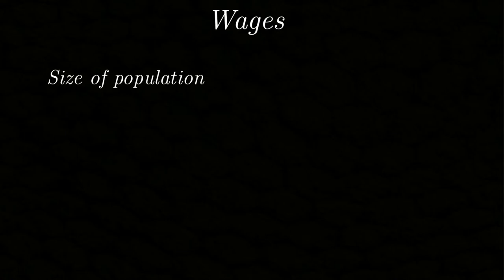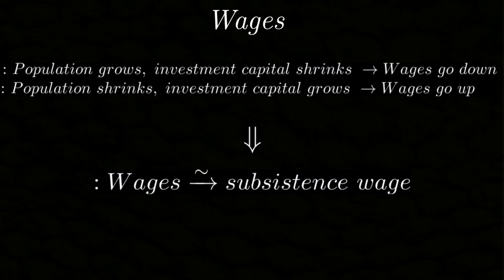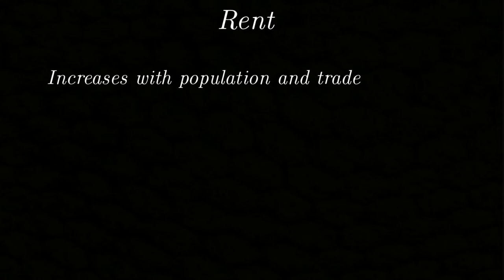Let us get into some more detail on each of these three components. Wages are, according to Smith, determined through a mechanism very similar to that of prices themselves. They depend on two factors: the size of the population and the available investment capital. If the population grows or the investment capital shrinks, more potential workers compete over fewer available workplaces, and the other way around. Furthermore, if we assume that people will have children as long as they can afford to, we find that over time wages will always tend towards the subsistence wage — the minimal amount a worker needs to survive. Similarly, profits tend to become as low as possible, as we saw when analyzing how market price tends towards natural price. Finally, rents will go up in proportion with the population and the economy, since both need space.